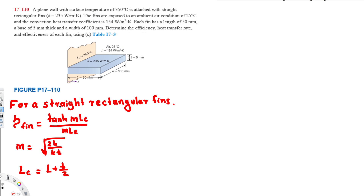This problem involves a plane wall with a surface temperature of 350 degrees Celsius attached with straight rectangular fins. The fins are exposed to ambient air at 25 degrees Celsius and the convection heat transfer coefficient is 154. Each fin has a length of 50 millimeters, a base thickness of 5 millimeters, and a width of 100 millimeters. We need to determine efficiency, heat transfer rate, and effectiveness using Table 7.3.